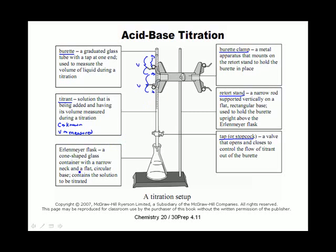In the Erlenmeyer flask we contain what I call the sample solution — it's the sample whose concentration we want to find. The concentration of the sample is always unknown; it's always what we're looking for. Its volume is always going to be known and given in the question — we measure the volume of fluid first. The only thing we're ever calculating in a titration is the concentration of our sample.